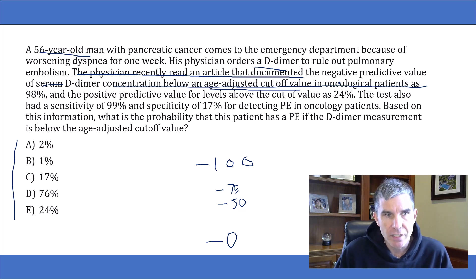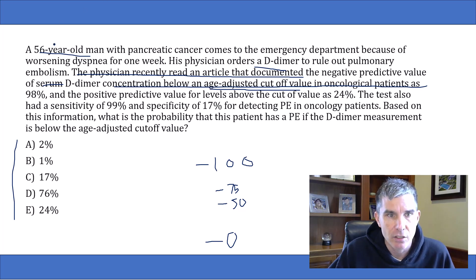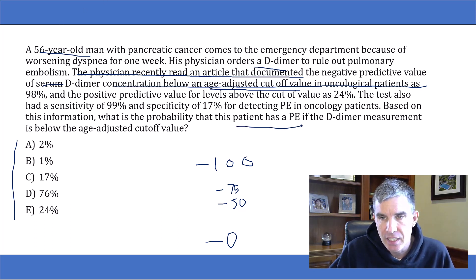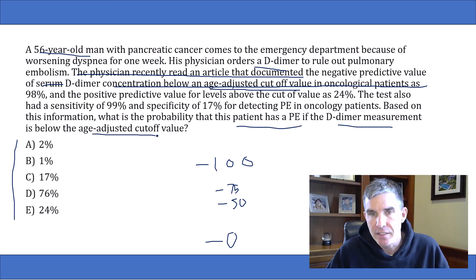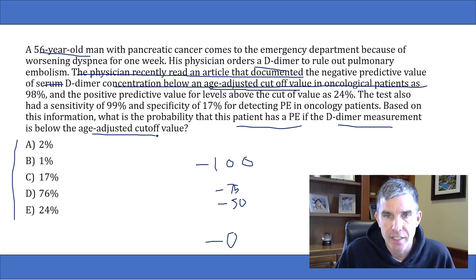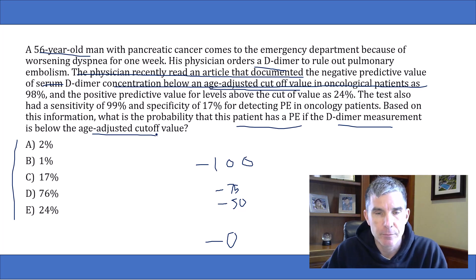Once you know the negative predictive value, you can answer this question. It's asking: what's the probability the patient has a PE if the D-dimer measurement is below the age-adjusted cutoff value? And that's going to be based on the negative predictive value.